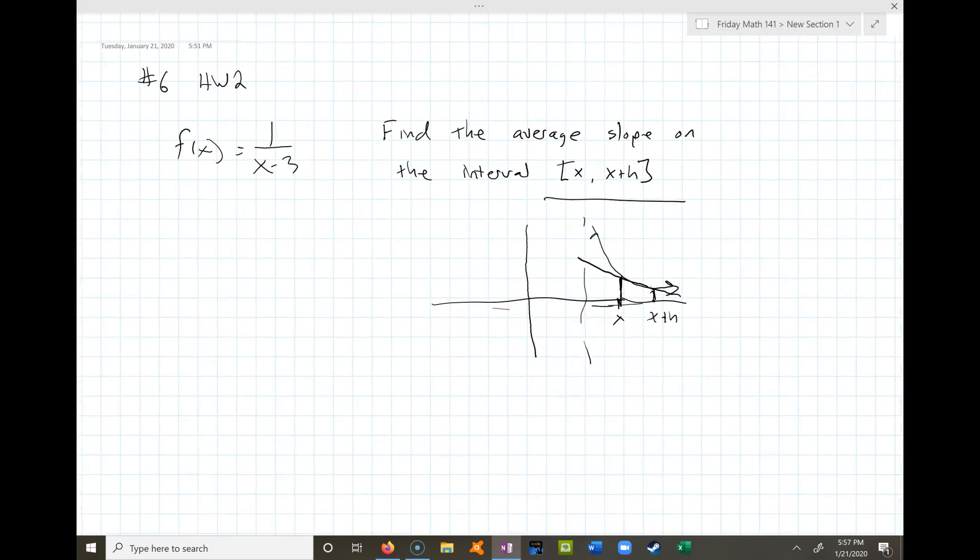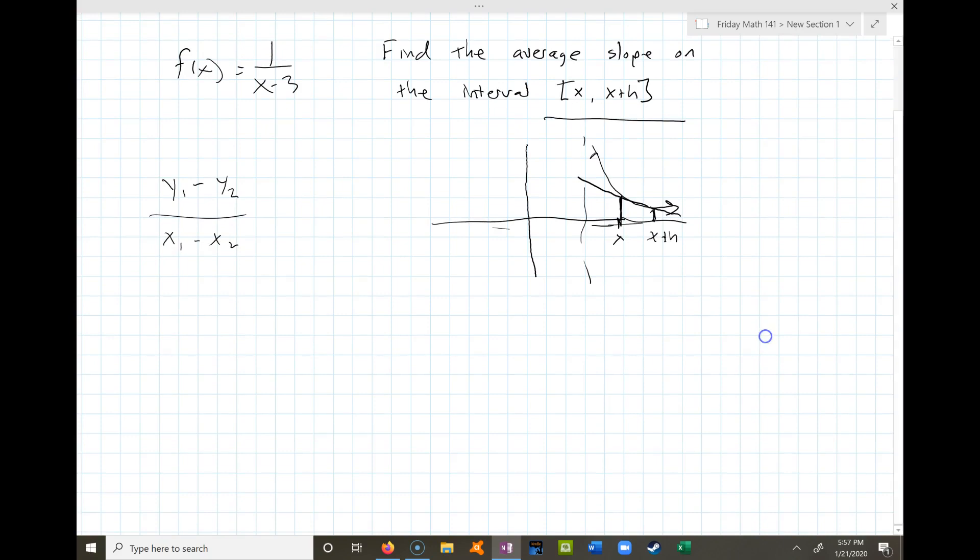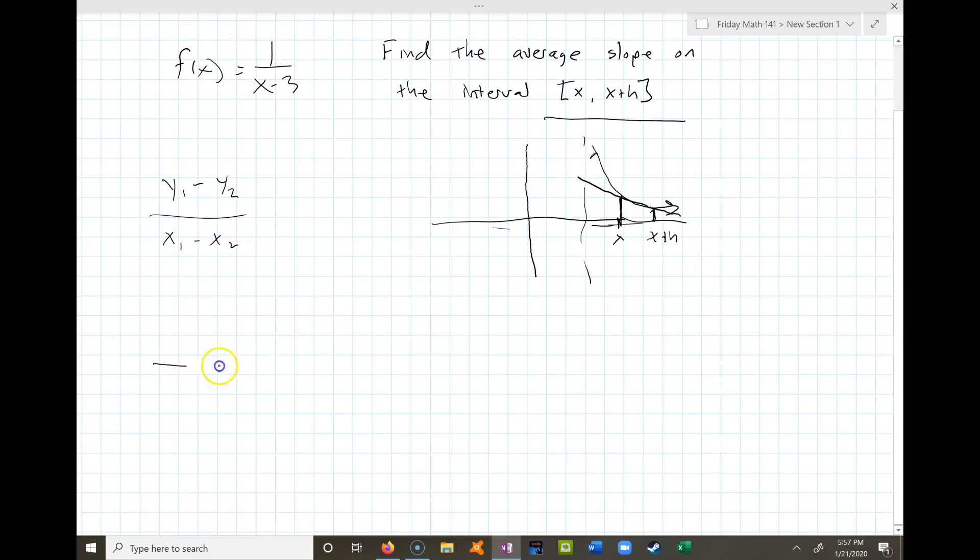What we're going to do is take basically y1 minus y2 over x1 minus x2, that's just that basic slope formula. The x's would be x plus h minus x because that's my two x values. And then on top I'm going to put the y values that correspond to the x values. So that would just mean plugging x plus h into the function and plugging x into the function. So if I plug x plus h into the function, I get one over x plus h minus three.